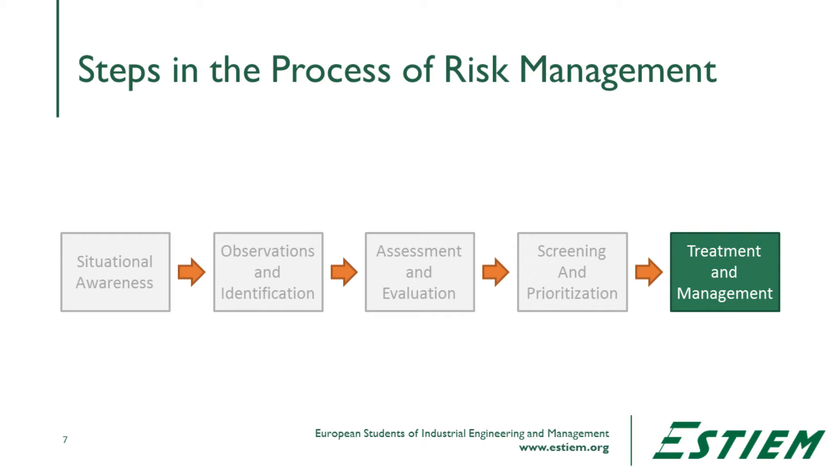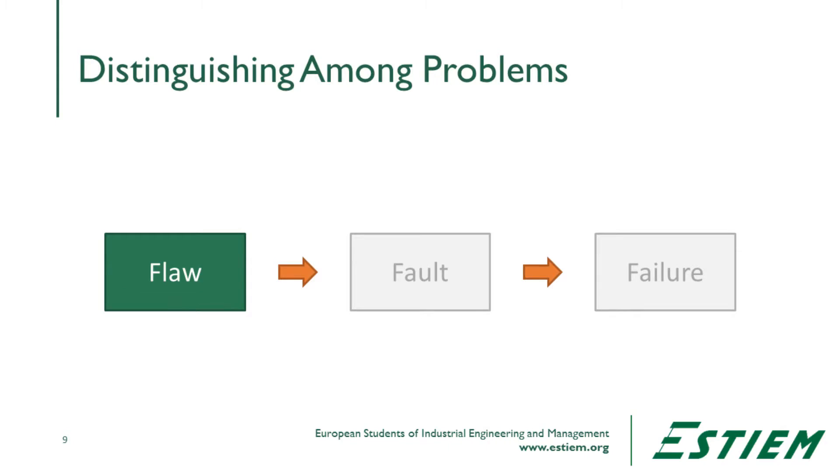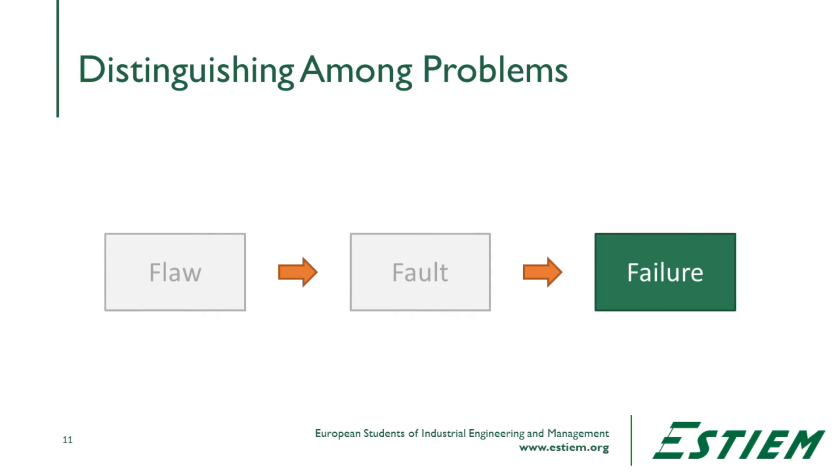We then work to achieve control so that the risk does not have the impact that was originally projected. Each of these five phases is meant to identify systems or issues that are creating problems in the organization. We need to distinguish between three different types of things happening — we can call these the three F's: flaw, fault, and failure.